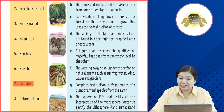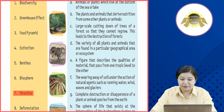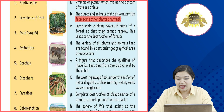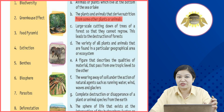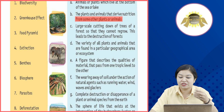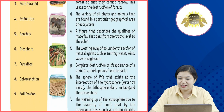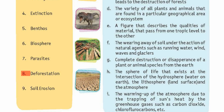7th: Parasites. Parasites किसे कहा जाता है? The plants and animals that derive nutrition from some other plants or animals. Plants में से कोई दूसरे animals या दूसरे plants उनका nutrition derive कर लेते हैं, तो उन्हें हम parasites कहते हैं।